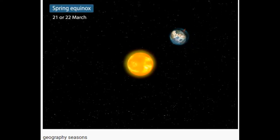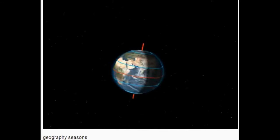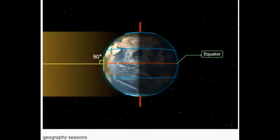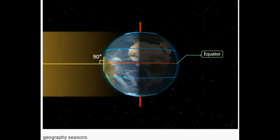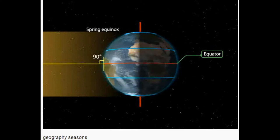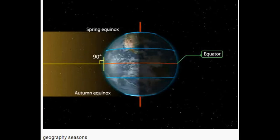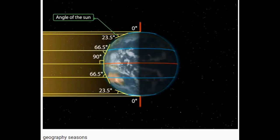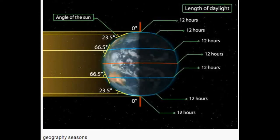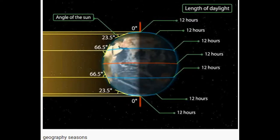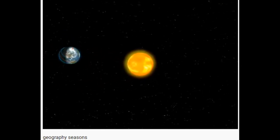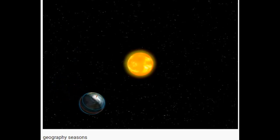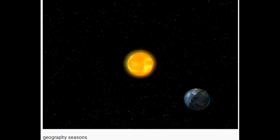Spring equinox occurs on the 21st or 22nd of March. The overhead sun is over the equator, which receives the largest amount of solar radiation at this time. The northern hemisphere is in the spring equinox while the southern hemisphere is in the autumn equinox. The angle of the sun decreases towards the poles. On this day, both hemispheres receive a similar amount of solar radiation, and the length of day and night is the same at all places on earth. After this day, it is spring in the northern hemisphere with longer days, while the southern hemisphere enters autumn with shorter days.